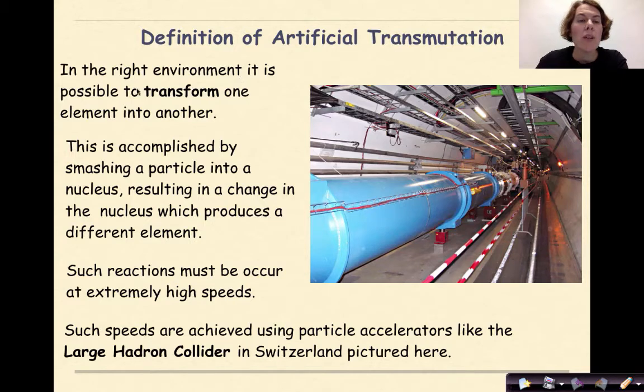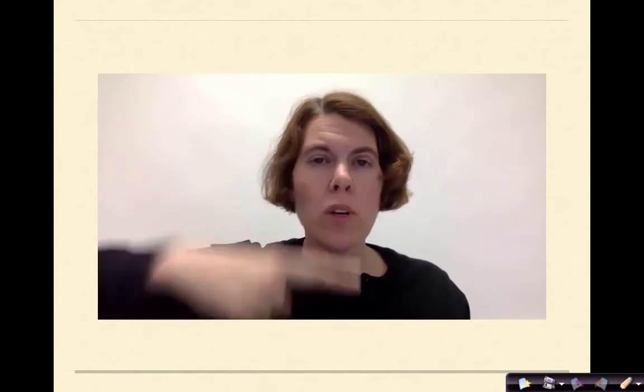Now let's talk about the definition of artificial transmutation. In the right environment, it is possible to transform one element into another. This is accomplished by smashing a particle into a nucleus, resulting in a change in the nucleus which produces a different element. Such reactions must occur at extremely high speeds. Such speeds are achieved using particle accelerators like the Large Hadron Collider in Switzerland, as we see right here.